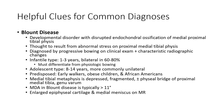Blount's disease: a developmental disorder with disruptive endochondral ossification of the medial proximal tibial physis, thought to result from abnormal stress. Diagnosed by progressive findings on clinical exam plus characteristic radiographic changes. Infantile form: age 1 to 3 years, bilateral in 60 to 80 percent, must differentiate from physiologic bowing. Adolescent form: age 8 to 14 years, more commonly unilateral.